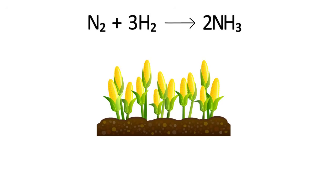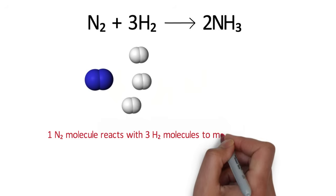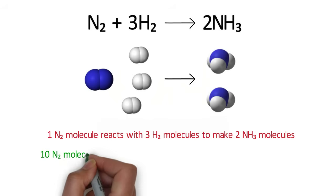Remember, our balanced reaction is a recipe, so what is it actually telling us? The balanced chemical equation tells us that one nitrogen molecule reacts with three hydrogen molecules to make two ammonia molecules. Well, what if we have more? Let's say we have 10 nitrogen molecules.